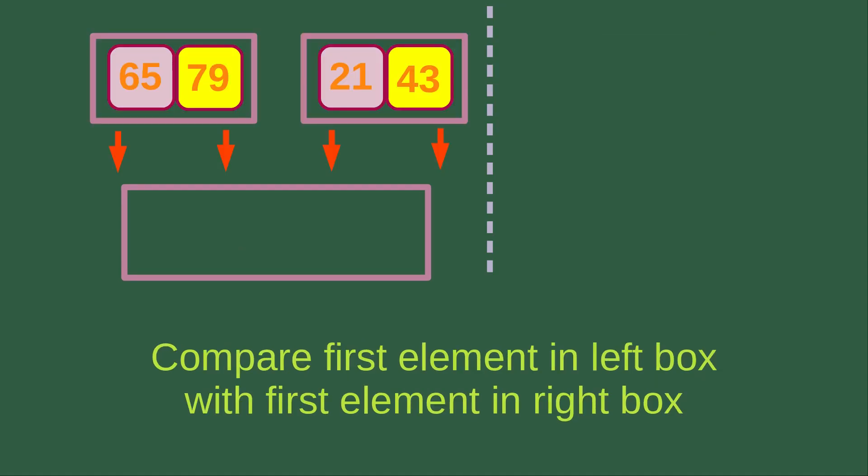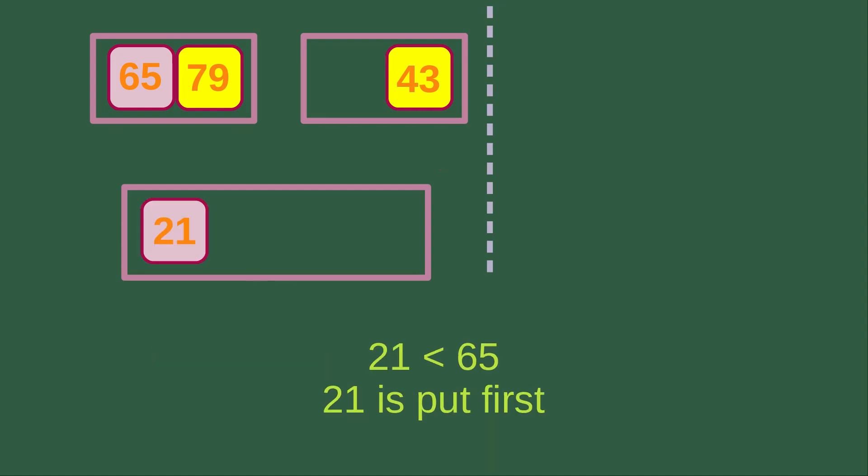Then we repeat the merging process by considering the two merged boxes: one contains 65 and 79, and the other contains 21 and 43. We need to compare the first element in the left box with the first element in the right box. The first element in the left box is 65, and the first element in the right box is 21. Since 21 is smaller than 65, we put 21 into the merging box first.